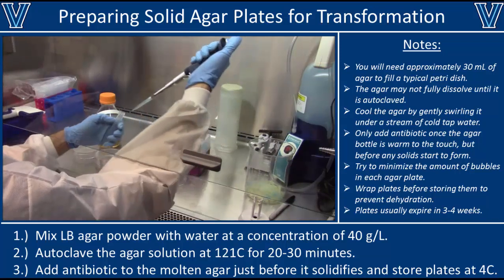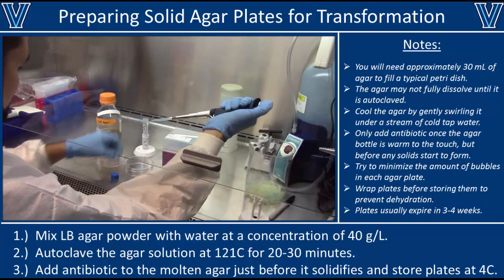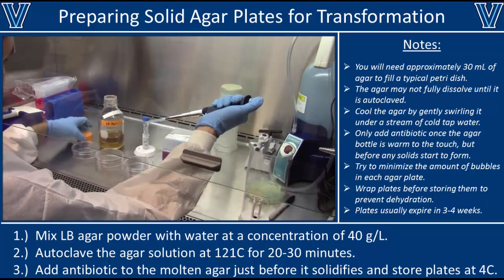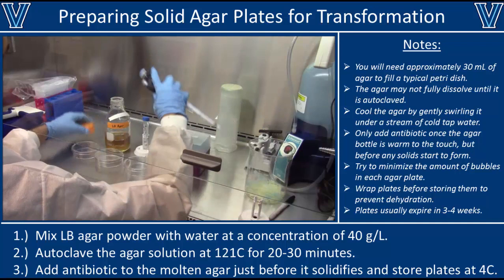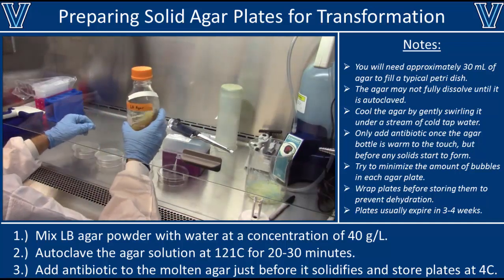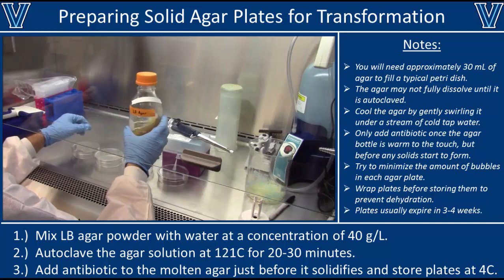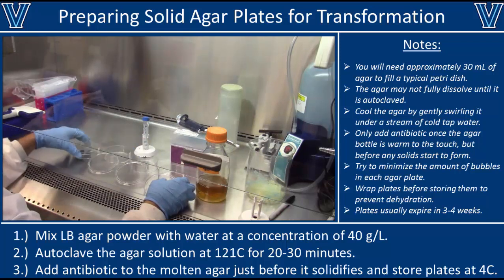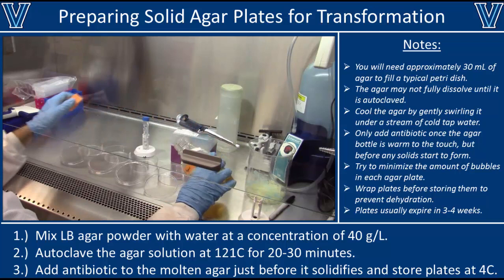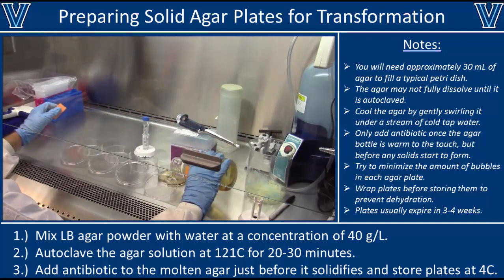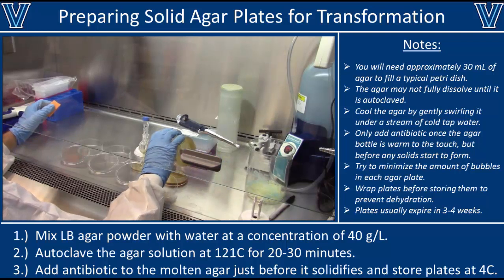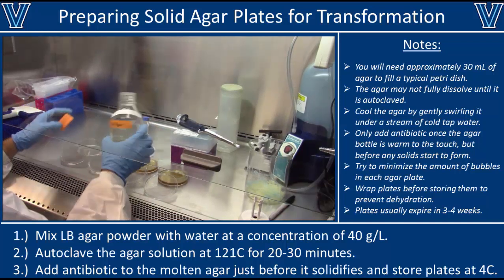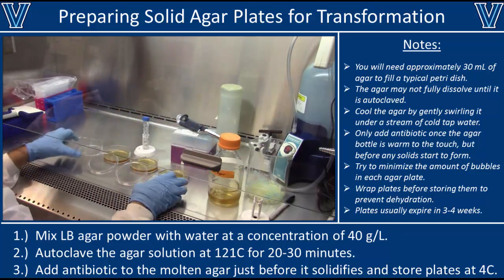Once your agar is cooled, it's time to make your plates. Add antibiotic to the LB agar — in this example I'm adding 200 microliters of 100 meg per ml ampicillin to 200 ml of LB agar. If you're working with a different antibiotic, you may use a different stock concentration or volume. Once the antibiotic is added, give it a good shake to mix, but try not to create any bubbles. Pour your plates — typically each plate takes around 30 to 40 ml, about a quarter inch of LB agar, roughly 30 to 50 percent full.